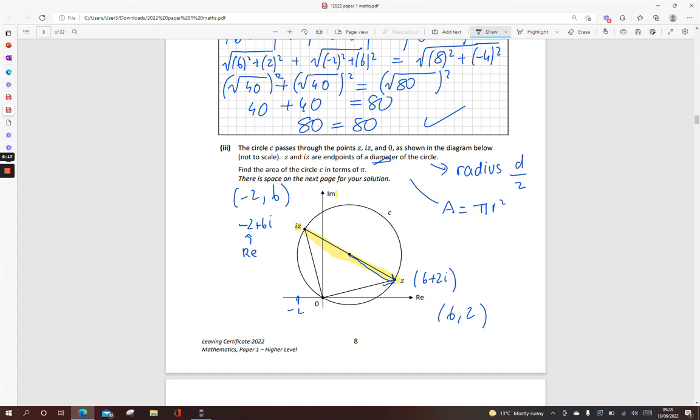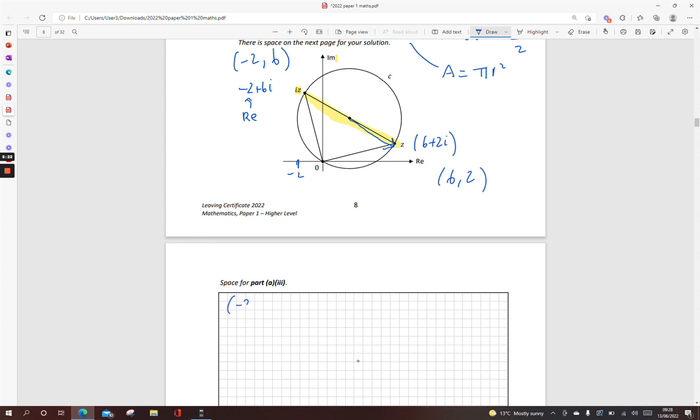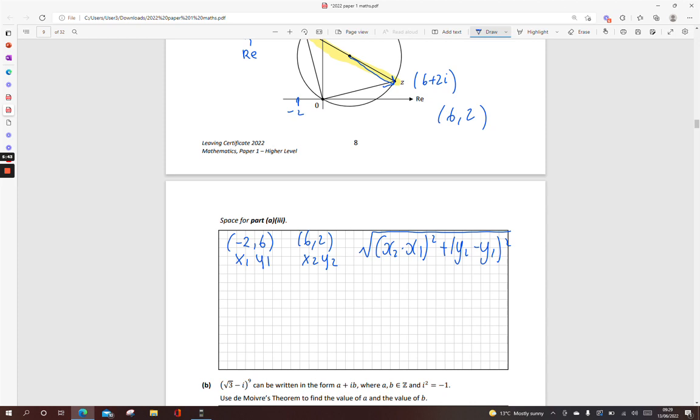So, I'm going to work out the distance between minus 2, 6, and 6, 2. Just leaving the i's out. Label me points. x1, y1, x2, y2. Now, throw that into your distance formula. x2 minus x1 squared plus y2 minus y1 squared. And force all these values in. I didn't give me much room here. x2, 6 minus minus 2 squared plus y2, 2 minus 6 squared.